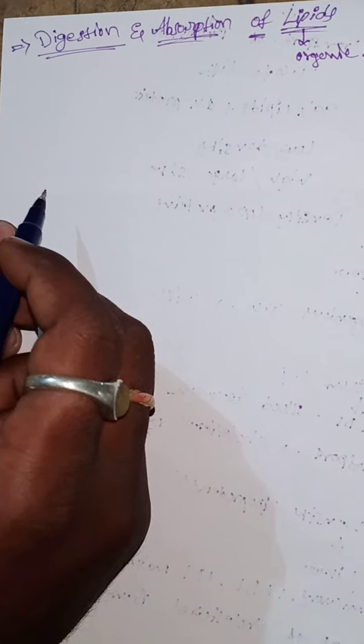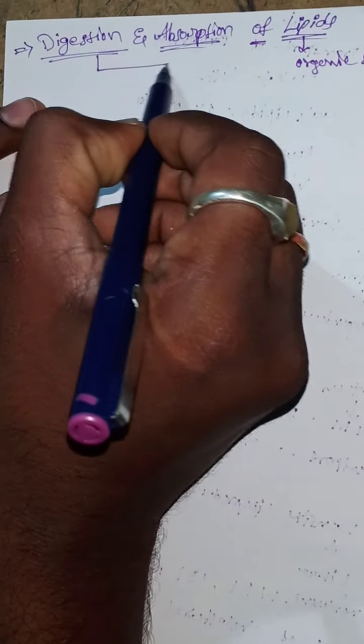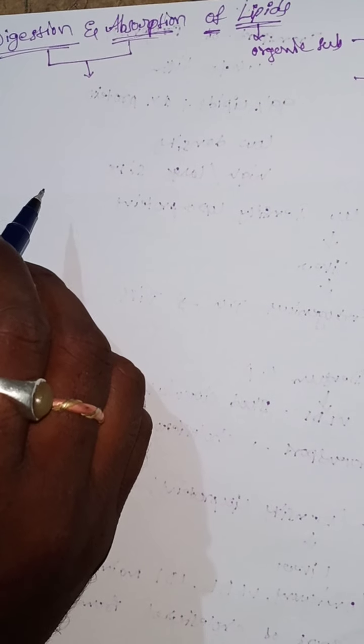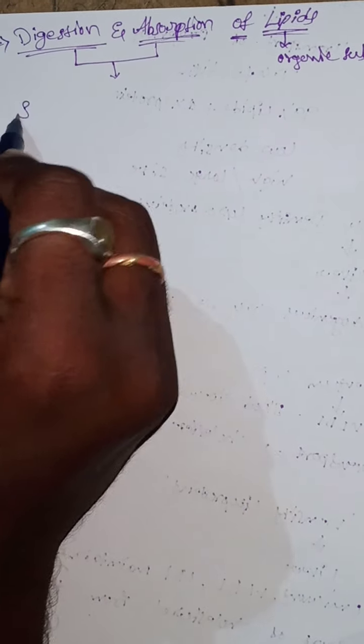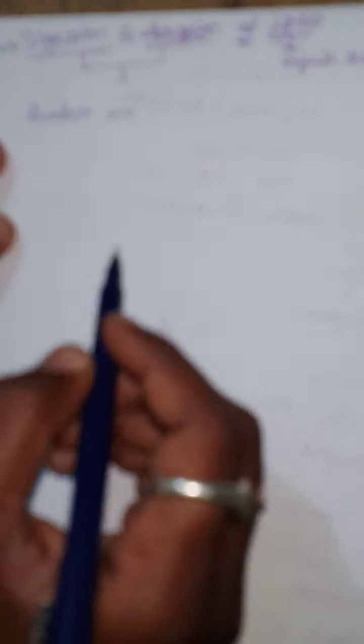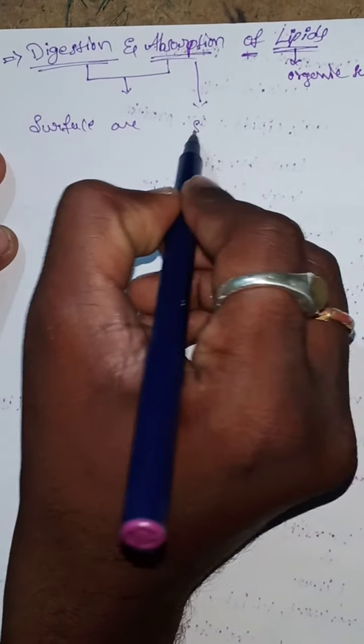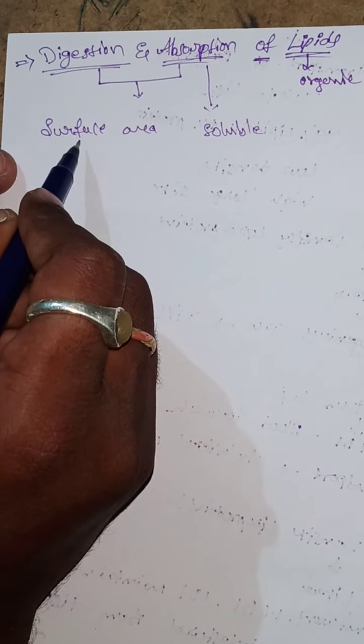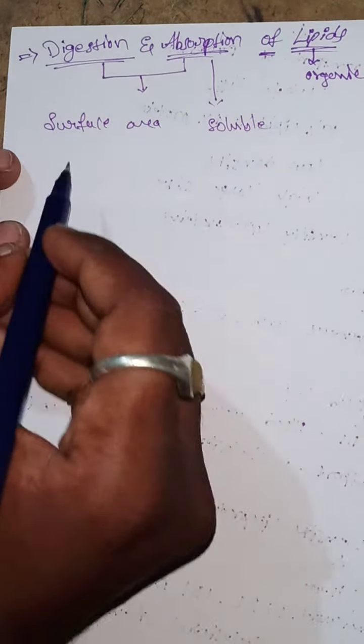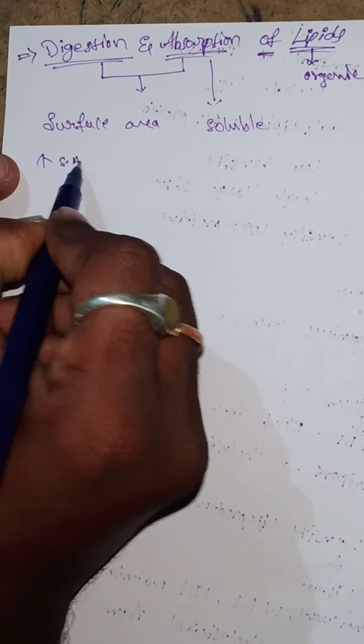Now, how does digestion and absorption of lipids occur in the body? The digestion and absorption of lipids depends upon two factors: digestion depends upon surface area, and absorption depends upon solubility.